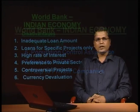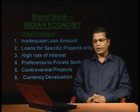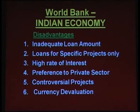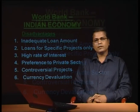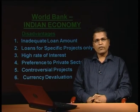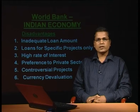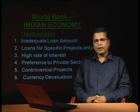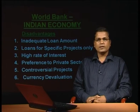There are some disadvantages of World Bank policies on Indian economy: inadequate loan amount, loans for specific projects only, high rate of interest, preference to private sector, controversial projects, and currency devaluation. Most of these issues mirror what was discussed in the criticism section. One important example is the controversial Narmada Valley project, where environmentalists across the globe opposed World Bank providing financial assistance to the Government of India for that project. It is also assumed that World Bank forced the Government of India to devalue the currency in 1991.